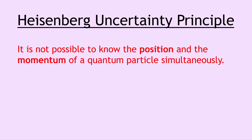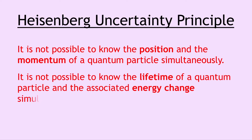As well as position and momentum, we can also define the Heisenberg uncertainty principle in terms of the energy change and lifetime of a quantum particle. This says that it is not possible to know the lifetime of a quantum particle and the associated energy change simultaneously. So again, at any one time we can only precisely measure one of these things.